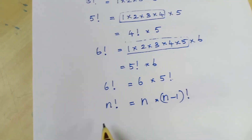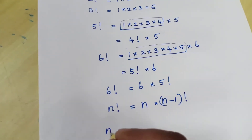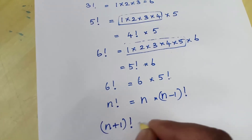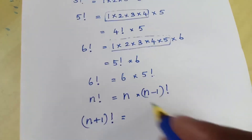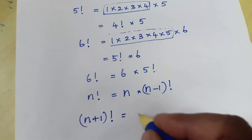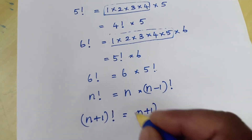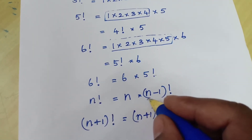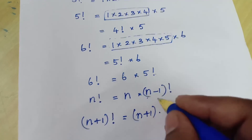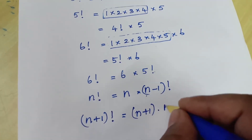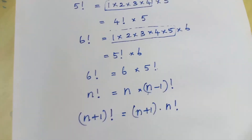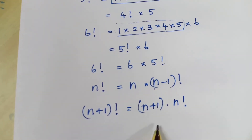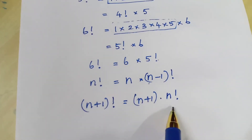So what is the next term after n? It is n+1. So (n+1) factorial — substituting n+1 in place of n — gives (n+1) × (n+1−1) factorial. That 1 gets cancelled, so we get n factorial. Therefore, (n+1) factorial is equal to (n+1) × n factorial.